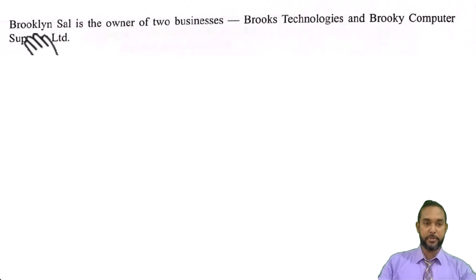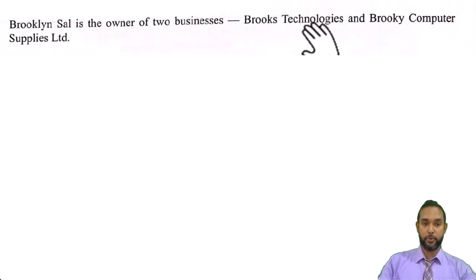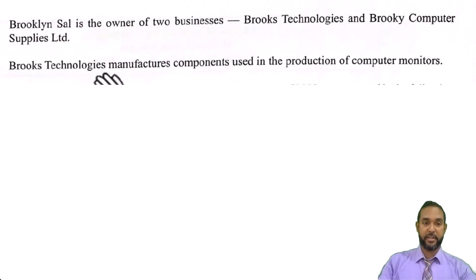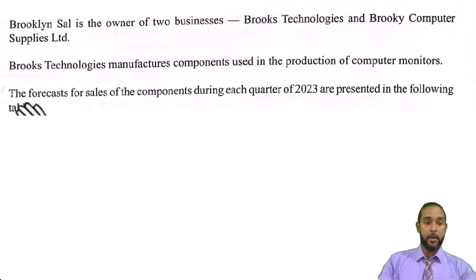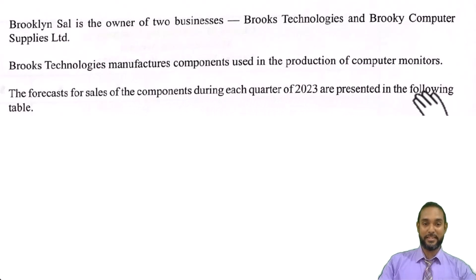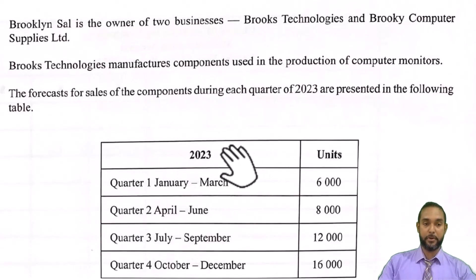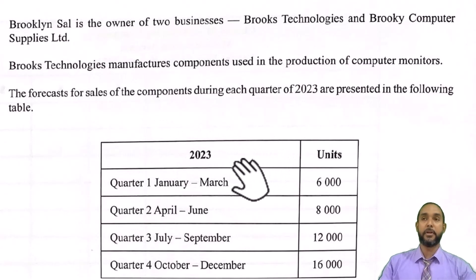Alrighty, so number four starts. Brooklyn Sal is the owner of two businesses: Brooks Technologies and Brookie Computer Supplies Limited. Brooks Technologies manufactures components used in the production of computer monitors. The forecasts for sales of the components during each quarter of 2023 are presented in the following table. Now, a quarter is a period of three months. Because a year has 12 months, a quarter of 12 is three.